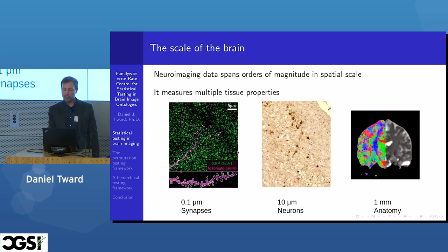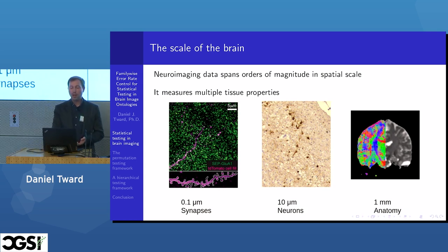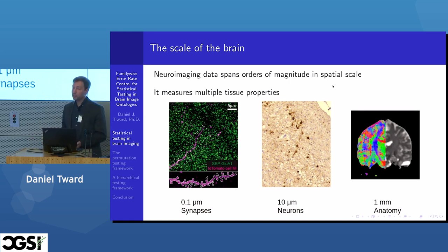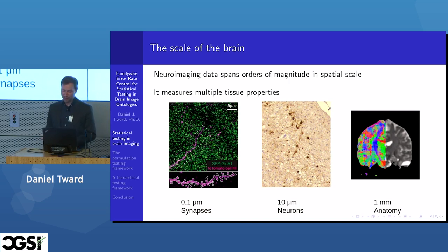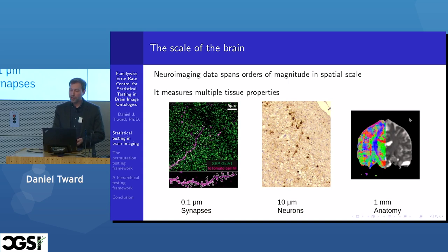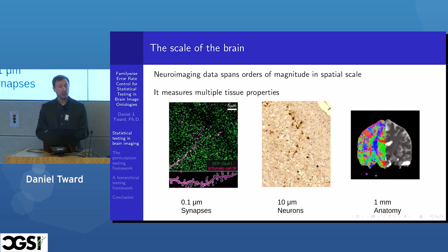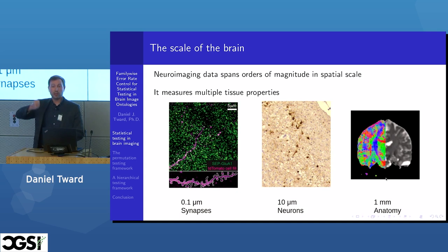Zooming out to the scale of whole cells, around 10 microns, we have individual neurons. This is a microscopy image of someone's brain who died of Alzheimer's disease. These brown cell bodies are called tau tangles — cells which accumulated a misfolded protein and died, which is one of the symptoms or causes of Alzheimer's disease. Zooming out further to the one-millimeter scale, we can look at how quickly water diffuses in the brain and in what direction. Blue means water is diffusing up and down, highlighting the corticospinal tract where your motor cortex projects down your spine to control muscles.